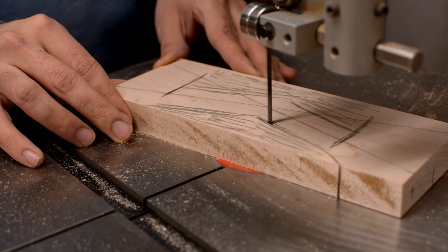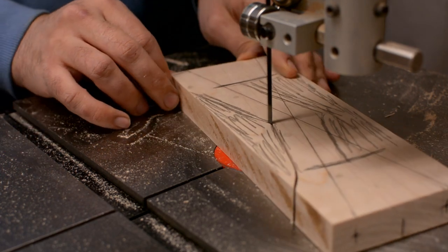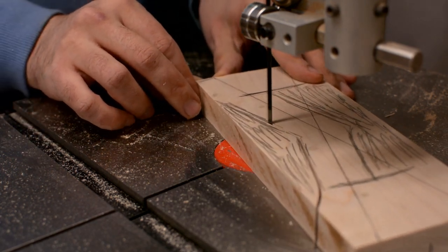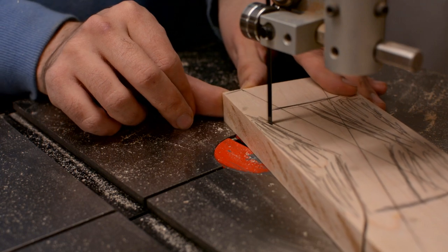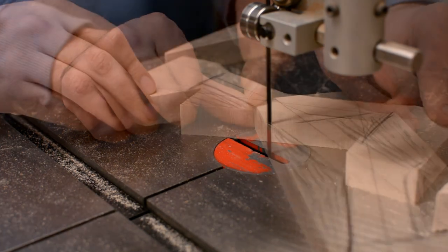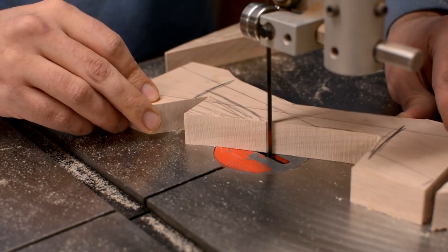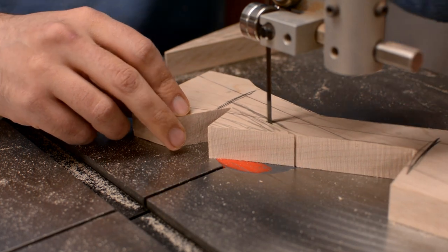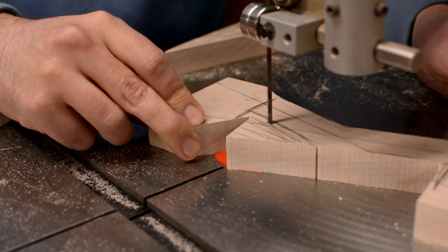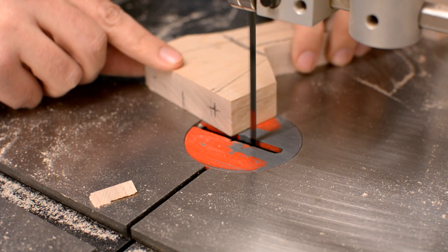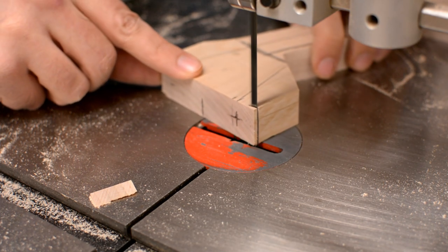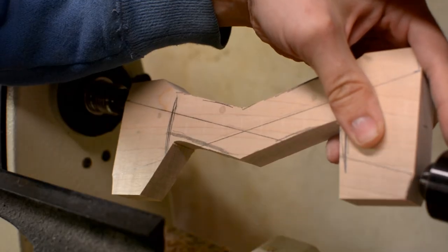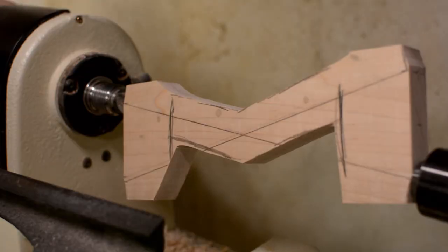To save time cutting mostly air at the lathe, I remove some of the waste at the bandsaw. It's a little intimidating with all different parts whizzing around, but you just have to ignore that and do one half of it, and then you switch to the other set of centers and do the other half.